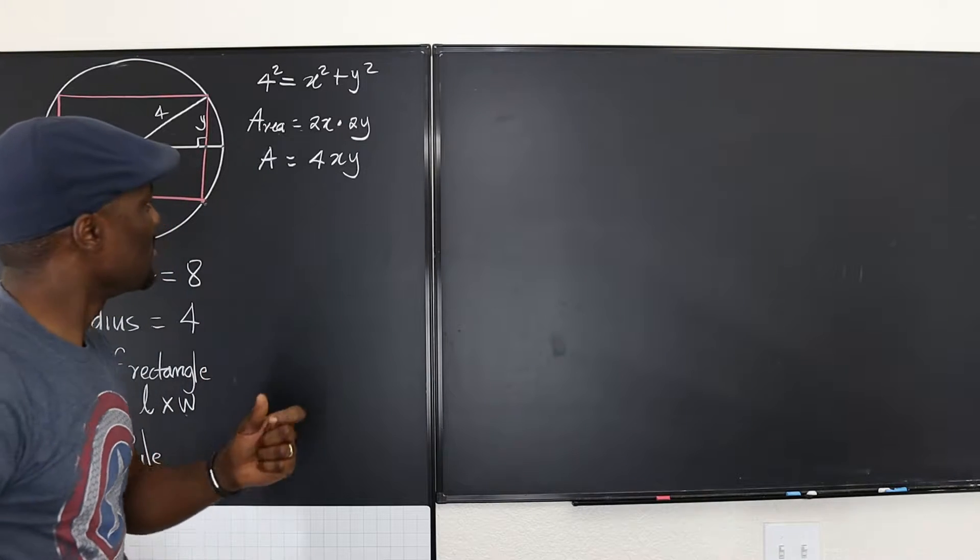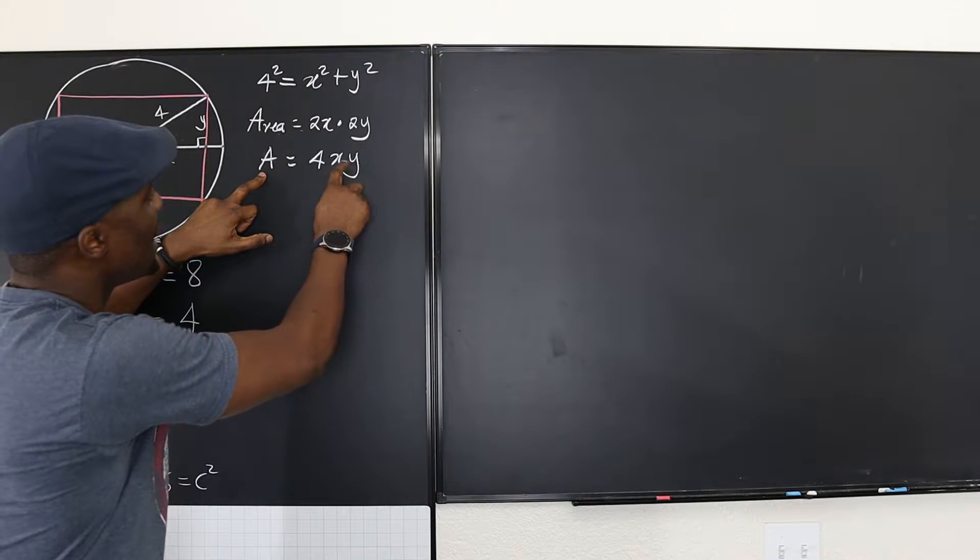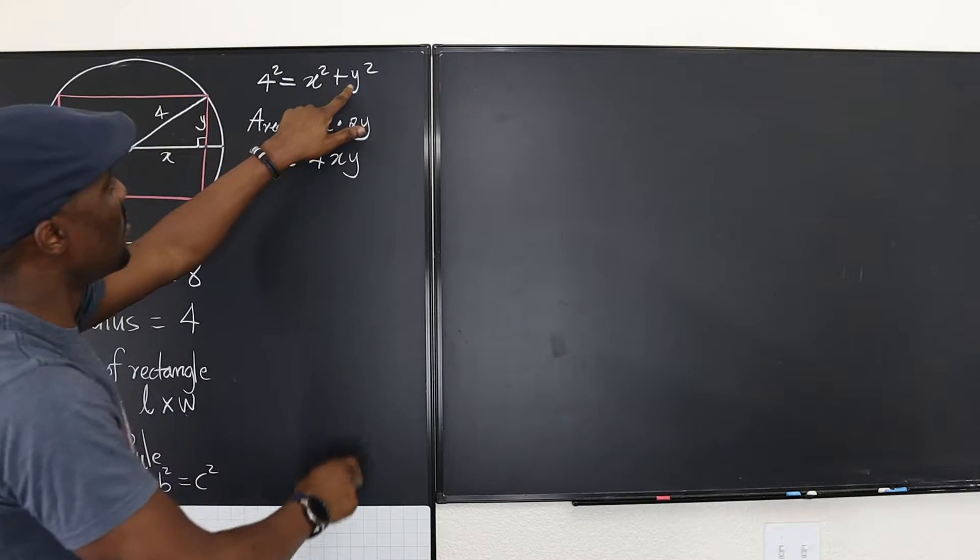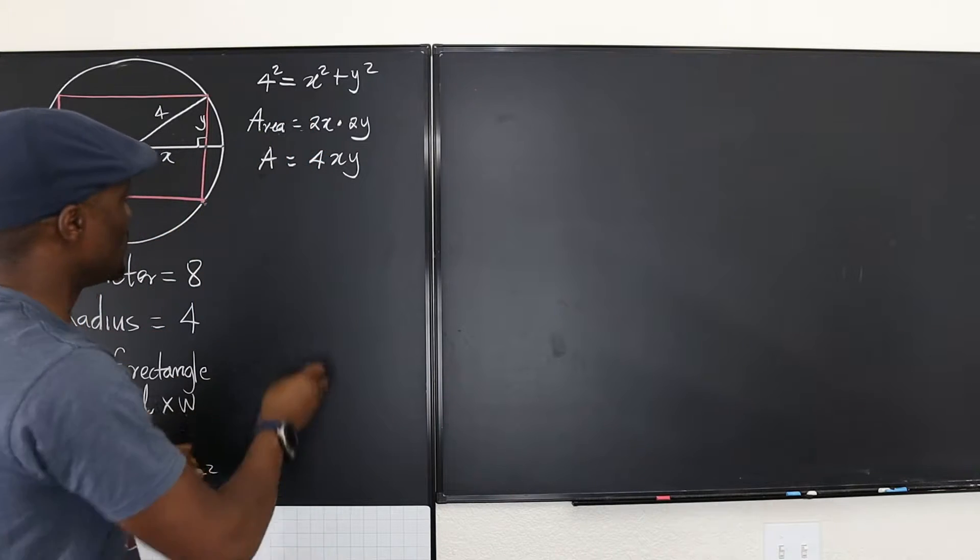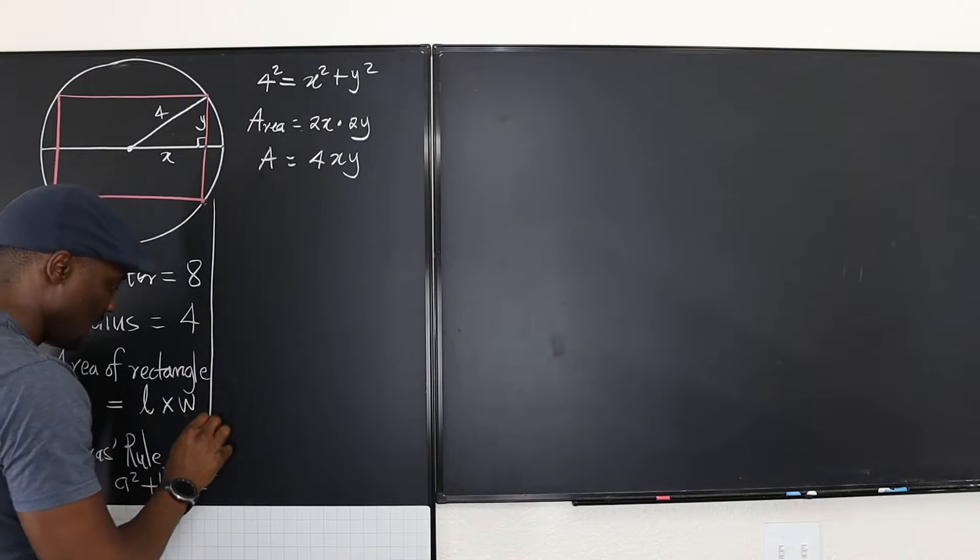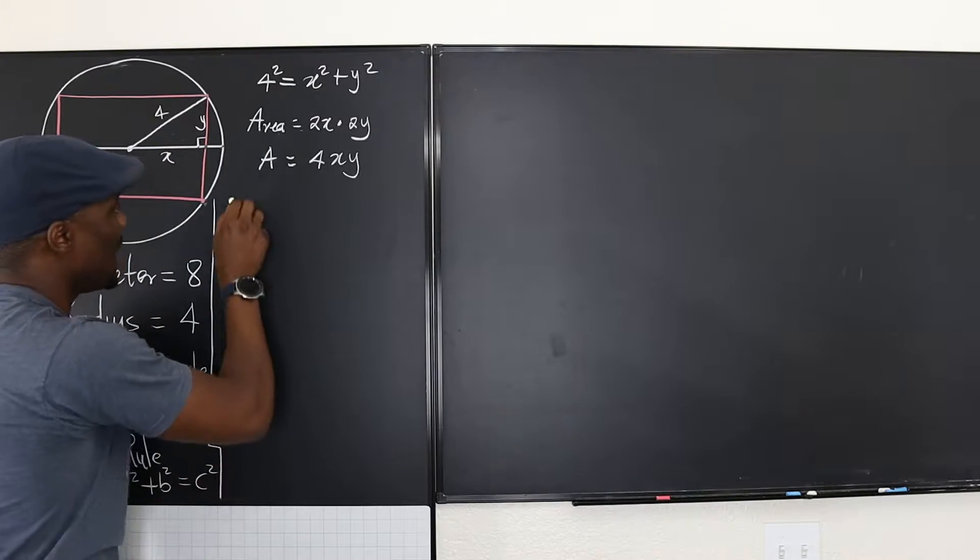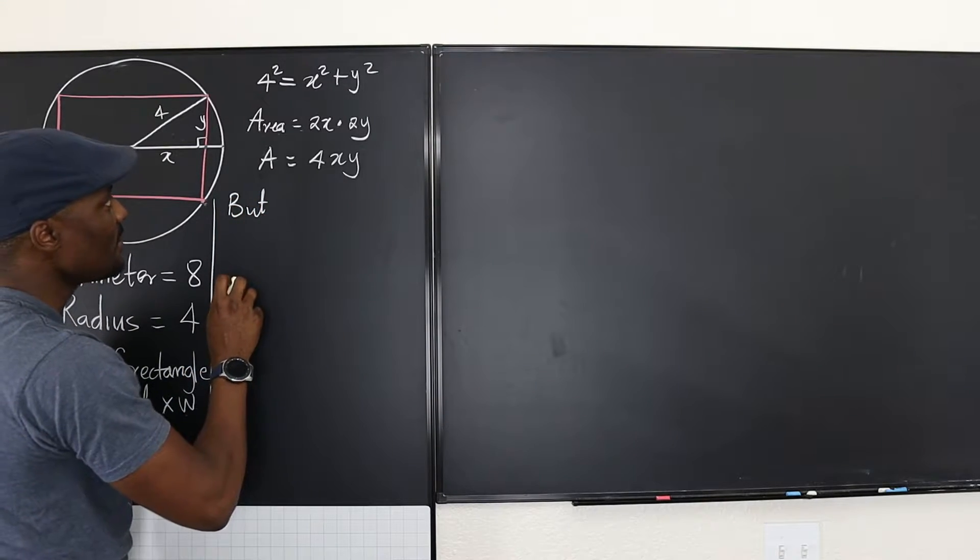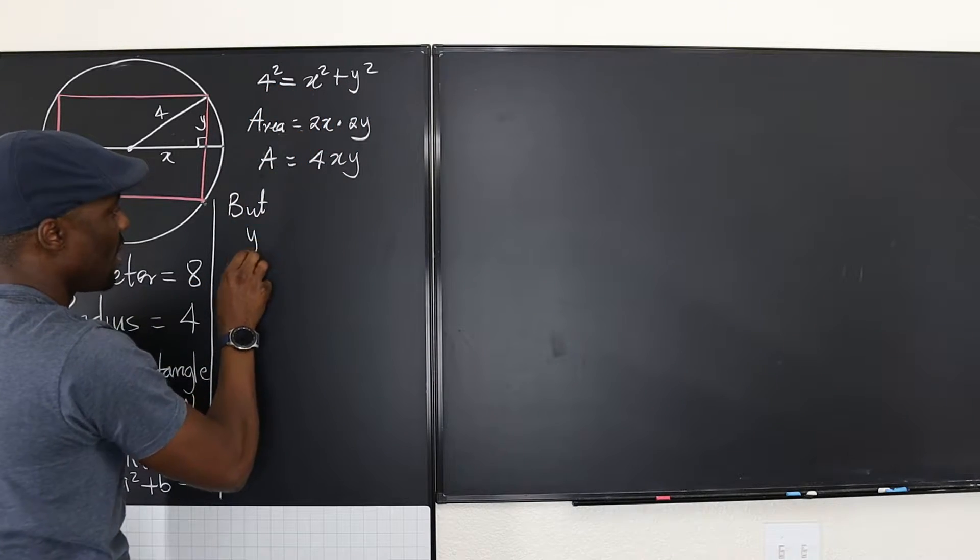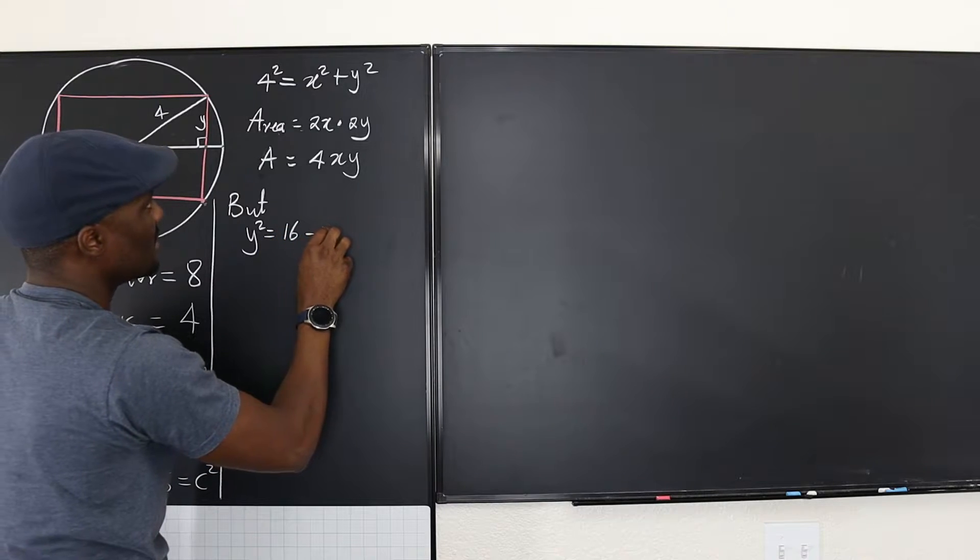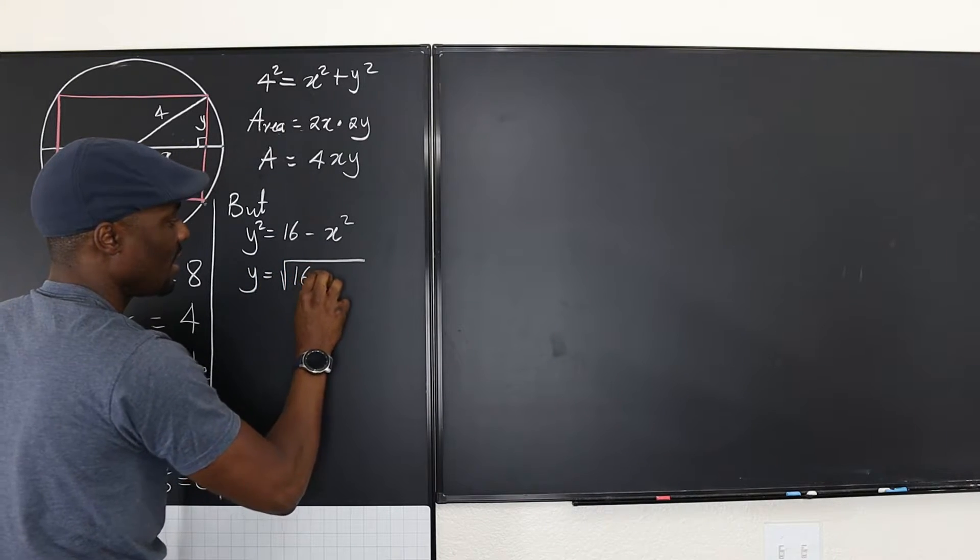Because we want just one equation, this is A and this is what we want to find. Why don't we try to write Y in terms of X from this equation. So from this equation, you can see that Y squared will be 4 squared minus X squared, which is 16 minus X squared.